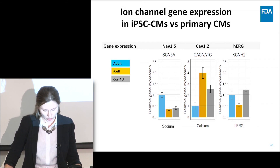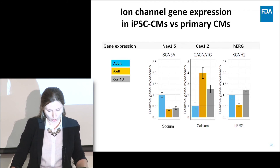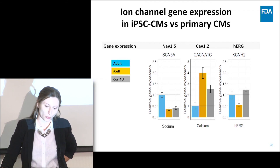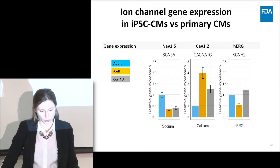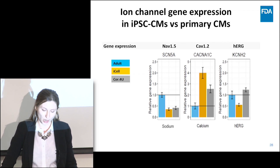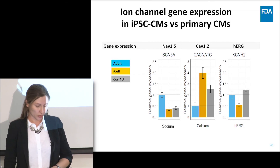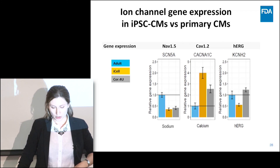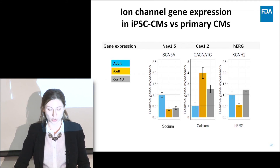Here are gene expression levels for the three ion channels primarily affected by the drugs in this study: sodium channel, responsible for both late and peak sodium current; calcium; and HERG. These are shown for two commercially available iPSC cardiomyocyte cell lines in orange and gray, normalized to human ventricular tissue shown in blue. Sodium channels are underexpressed in iPSC cardiomyocytes compared to human heart, calcium channels are significantly overexpressed, and expression of HERG potassium channels depends on the cell manufacturer.